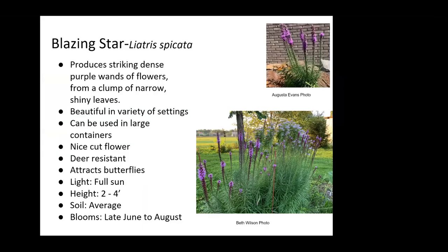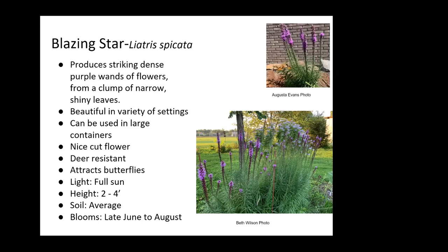Blazing star is a plant I really enjoy. I think it's good if you surround it with other shorter plants because it is very tall, reaching up to four feet. It is deer resistant and can be used in the back of a border or in your front yard landscaping with under-planting. It makes a beautiful long-lasting cut flower and does attract a lot of butterflies. It's one of those plants where people walk by and say, 'What's that plant?'